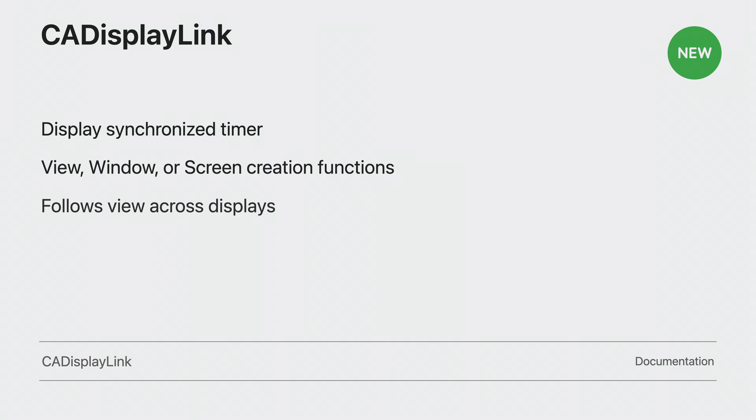You can now create a CADisplayLink object on macOS — the same CADisplayLink you may be familiar with from iOS. It is a timer object that allows your app to synchronize its drawing to the refresh rate of the display. A directly initialized DisplayLink object is synchronized with the main display, but since macOS supports multiple displays, you can get a DisplayLink object directly from an NSView, NSWindow, or NSScreen using their new DisplayLink target selector functions.